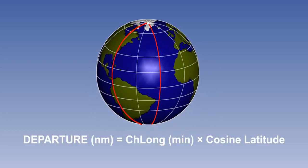This gives us the basic departure formula. Departure equals the change of longitude in minutes multiplied by the cosine of the latitude.